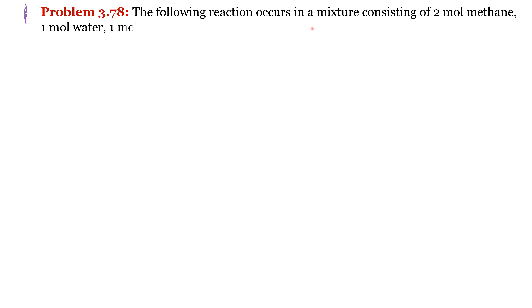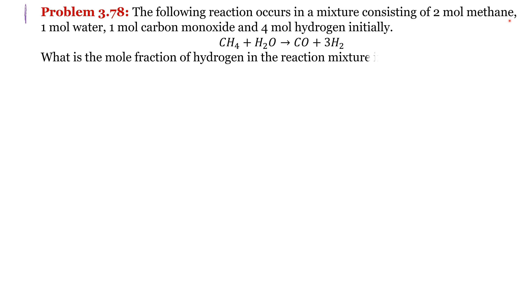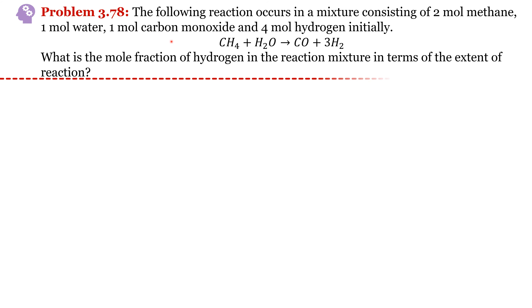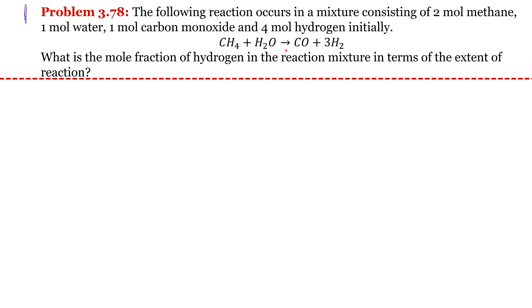Problem number 3.78: the following reaction occurs in a mixture consisting of 2 moles of methane, 1 mole water, 1 mole CO2, and 4 moles hydrogen initially. Find out the mole fraction of hydrogen in terms of extent of reaction. We can assume epsilon is the extent of reaction and then find out the moles of reactant and product as the reaction progresses.